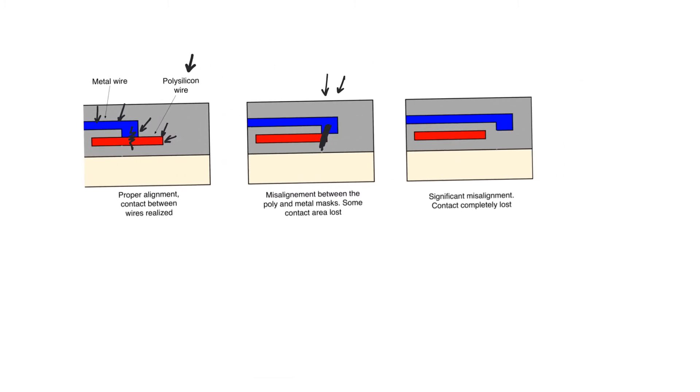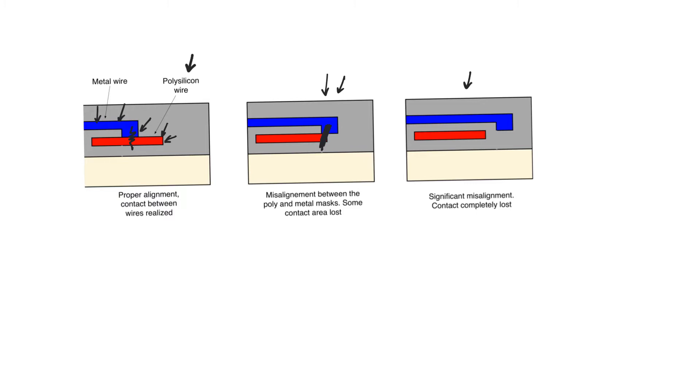In fact, if the misalignment between the two layers is severe enough, we can actually completely miss the contact and form an open circuit where one was not planned. You can also imagine situations in which you form short circuits where short circuits were not planned because of misalignment.